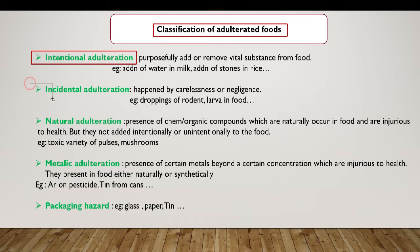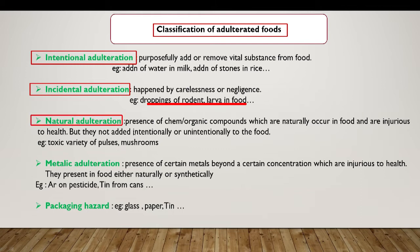The second type is incidental adulteration, which happens by carelessness or negligence — for example, droppings of rodent or larvae in food. The third type is natural adulteration, where chemical or organic compounds naturally occur in food and are injurious to health, but are not added intentionally or unintentionally — for example, toxic varieties of pulses or mushrooms.